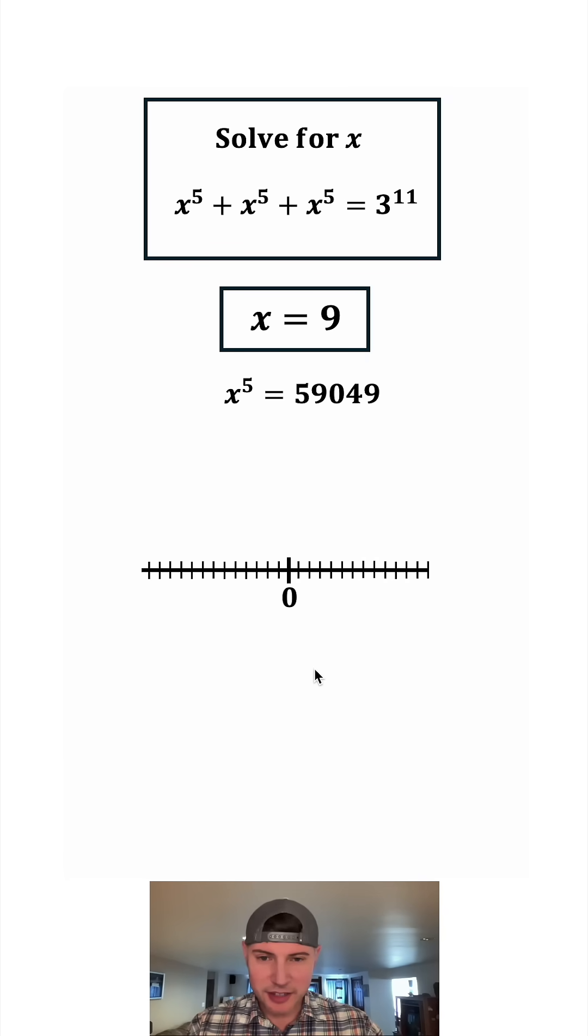It starts with a number line where this is zero. And our first solution is going to be located at nine. Now this number line represents all the real numbers. To get the imaginary numbers we can introduce a vertical line. And it can have the same scale. These are all the real numbers and these are all the imaginary numbers. So we can plot a point right there.